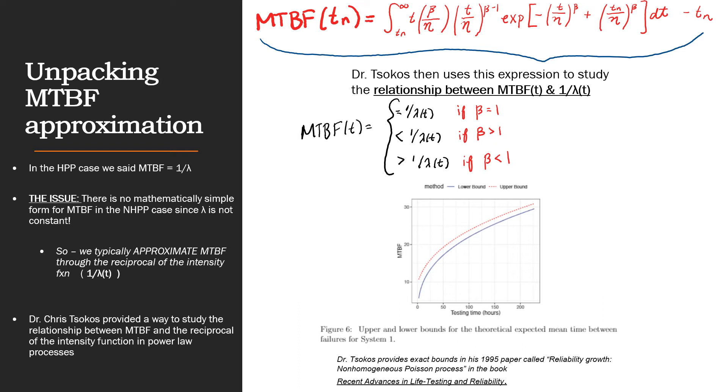We will, however, spend a little time returning to mean time between failure, so MTBF. Recall that we said that MTBF is equal to the expected value of the exponential distribution in the HPP case. So, that is 1 over λ.